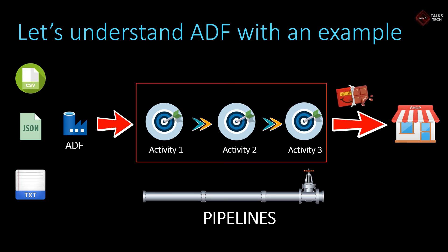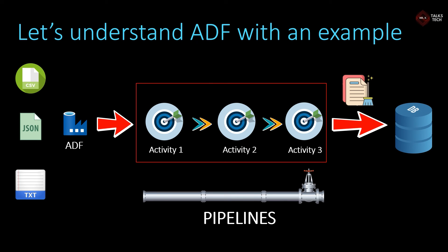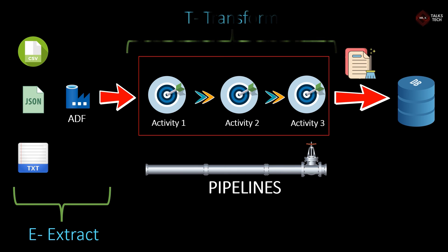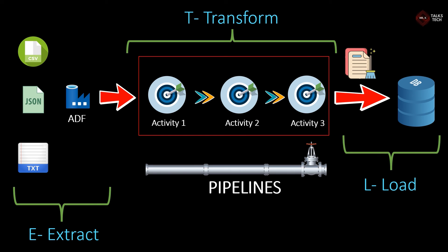At the end of activity three, we get the most cleaned version of the data, which is then loaded into the database. This end-to-end data flow is managed by Azure Data Factory. Azure Data Factory acts as an orchestrator — it manages the entire flow without performing the actual activities itself; instead it uses pipelines. The first step of data extraction is called extract, the middle part of data transformation happening across the three activities is called transform, and loading the final data into the database is called load. Together, this is ETL — extract, transform, load — carried out using Azure Data Factory, typically by data engineers.